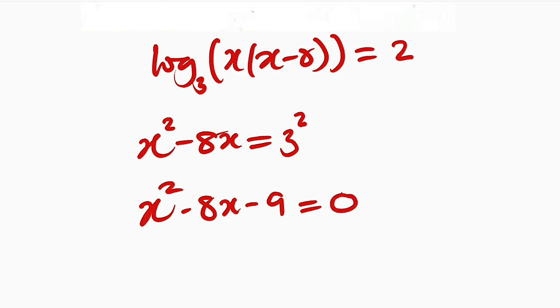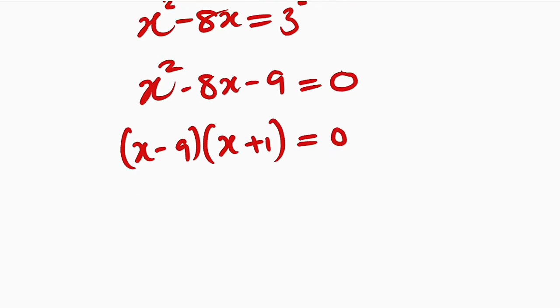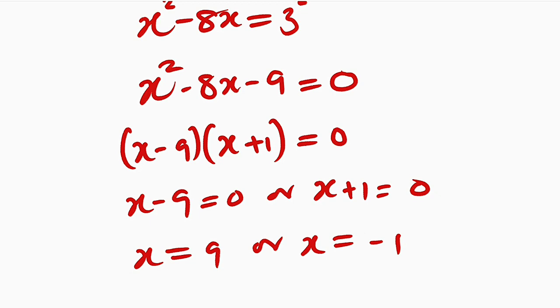This is a quadratic equation that can be factorized. Let us think of two numbers we can multiply to get 9. When we add them, we get negative 8. You should know that the numbers must be negative 9 and positive 1. Negative 9, positive 1. If you set each factor to be equal to 0, we have this equal to 0, or x plus 1 equal to 0.